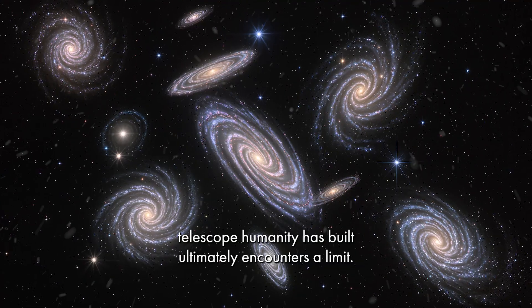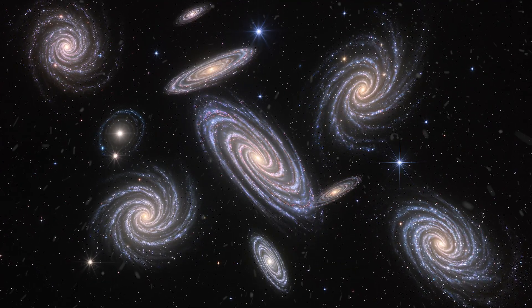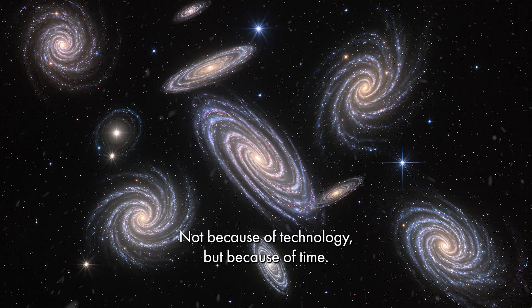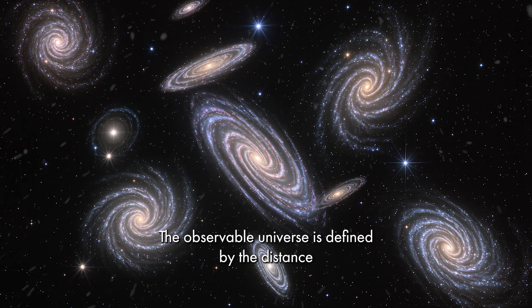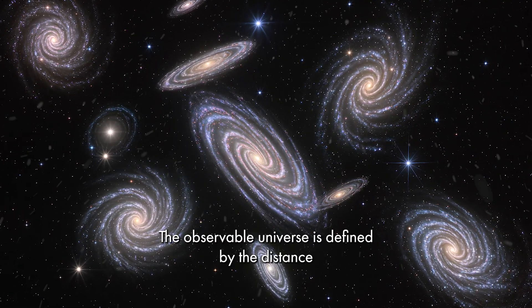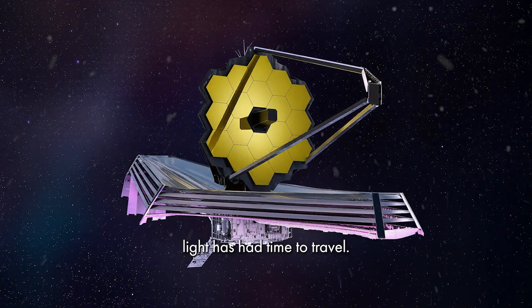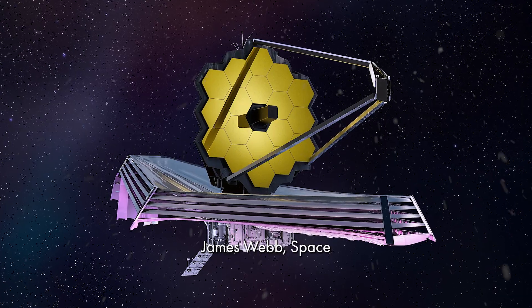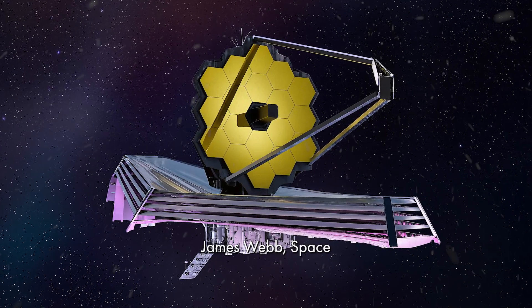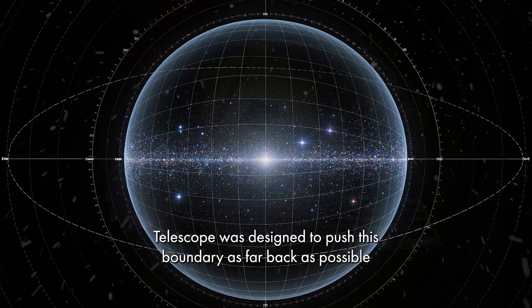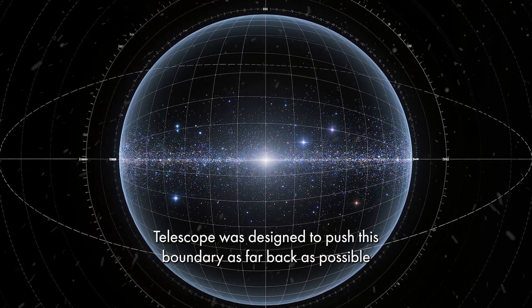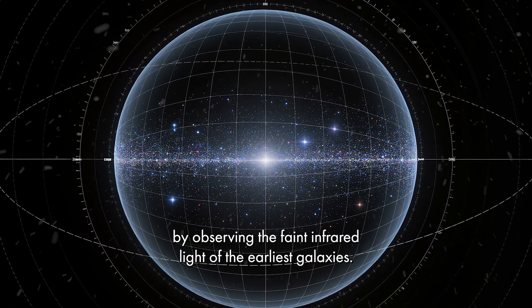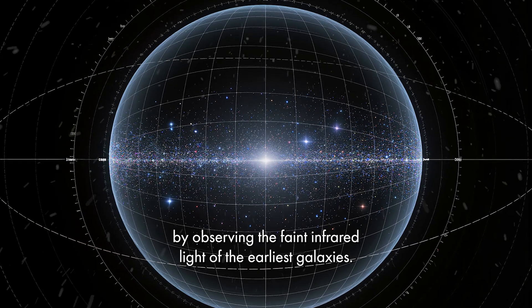Every telescope humanity has built ultimately encounters a limit, not because of technology, but because of time. The observable universe is defined by the distance light has had time to travel. Beyond this boundary, information has not yet reached us. James Webb Space Telescope was designed to push this boundary as far back as possible by observing the faint infrared light of the earliest galaxies.